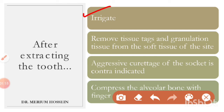The second step is to remove all necrosed tissue surrounding the extraction site and also the granulation tissue present in the tooth socket. One important thing to keep in mind is that we do not need to aggressively curettage the socket. The extraction site is already a wound — we do not need to create another wound by aggressively curetting it. So aggressive curettage is contraindicated.